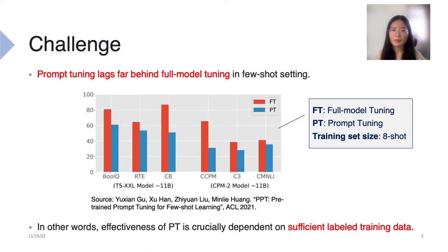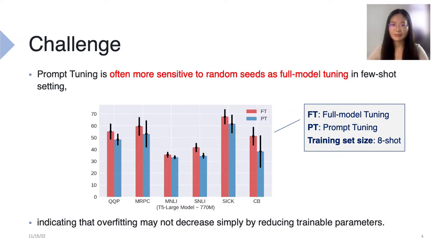However, there is a problem with prompt tuning: it requires a lot of training data. Under few-shot learning settings, it lags far behind full model tuning, as shown in the diagram. In other words, the effectiveness of prompt tuning is crucially dependent on sufficient labeled training data. Our experiments confirm the same finding, which is that prompt tuning underperforms full model tuning under the few-shot setting and is often more sensitive to random seed selection.